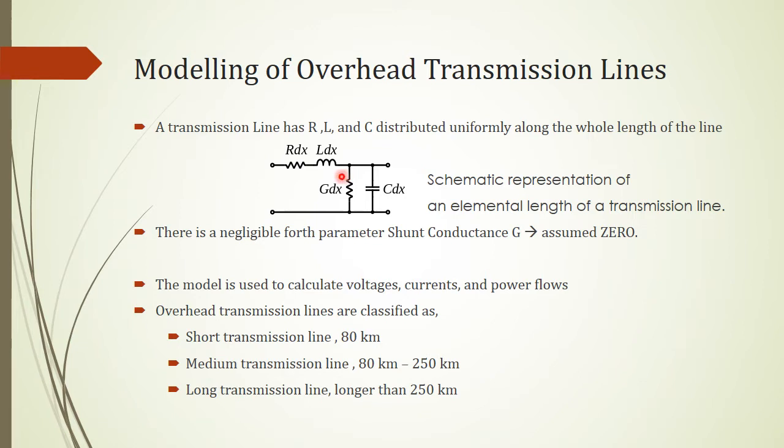Notice that there is a negligible fourth parameter, shunt conductance G. Here we assume that it's zero because we don't want to have any transmission line that have leakage current. It causes a lot of losses.